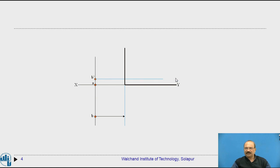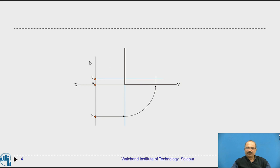Now we bring point B here using a projector line up to the intersection line. Keep the compass here, take this dimension, and draw the arc — it will cut the horizontal reference plane at the intersecting point. Bring this particular point down and it will intersect at point B double-dash. Front view points are named with a single dash, top view without a dash, and the profile side view with a double dash.